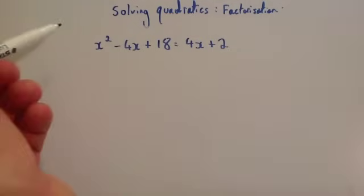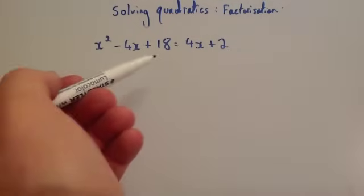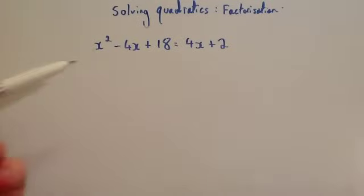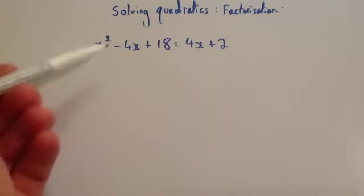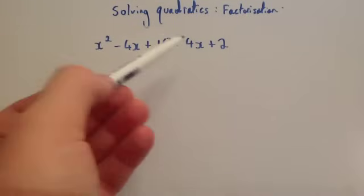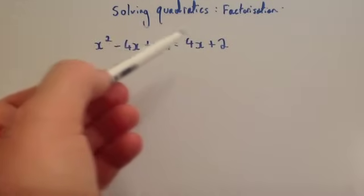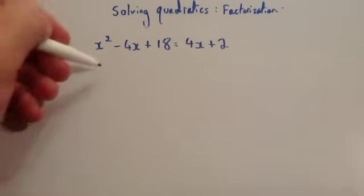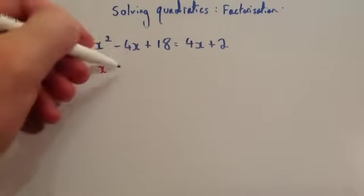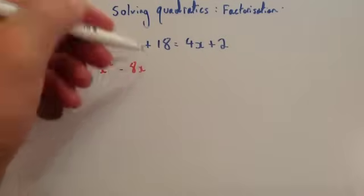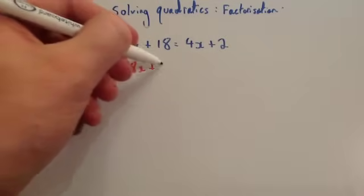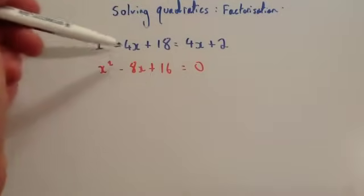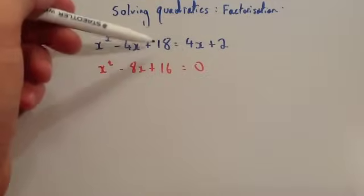When you solve a quadratic such as x squared minus 4x plus 18 equals 4x plus 2 using factorisation, it has to equal zero. You want to get x squared to be positive and make the other side zero. Bring the 4x and the plus 2 across by taking away 4x and 2 from both sides. Minus 4x from minus 4x gives minus 8x, and 18 take away 2 gives 16, so you get x squared minus 8x plus 16 equals zero.